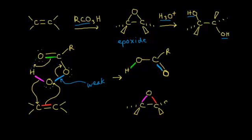So our end result is to form a carboxylic acid and our epoxide. Let's look at an actual reaction for the formation of an epoxide, and then we'll talk about how to form a diol from that.